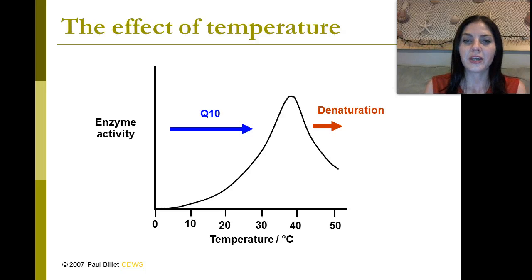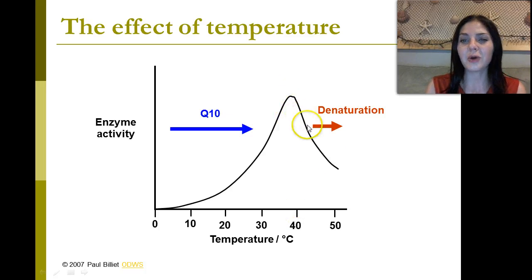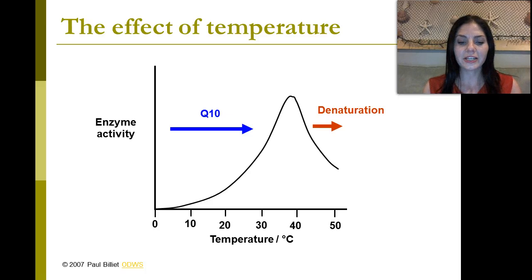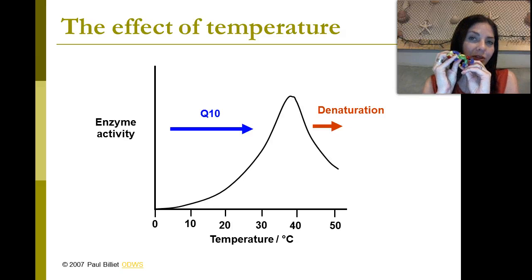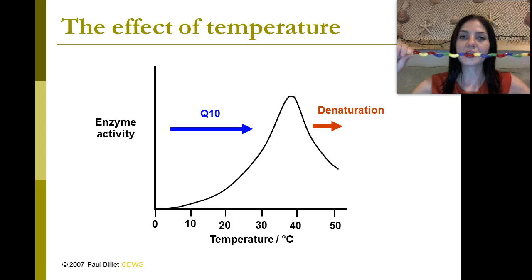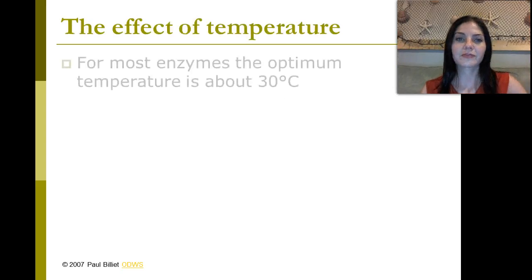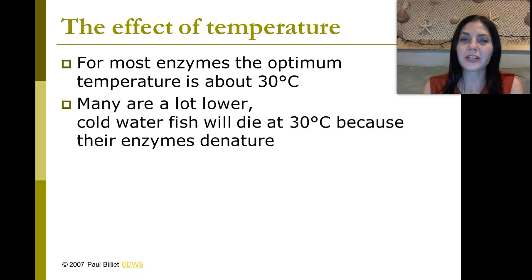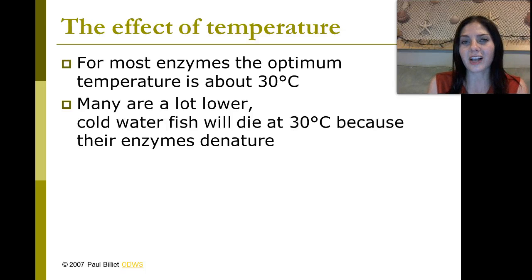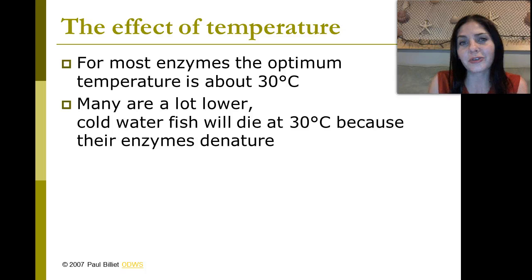The effect of temperature on enzymes: if you look at the graph, this enzyme is most active at about 37 or 38 degrees Celsius. If it gets too hot, though, the enzyme activity drastically drops off because that enzyme is denaturing. Denaturing means that all those bonds in the protein are being broken down, and it goes back into its primary structure. For most enzymes, the optimum temperature is about 30 degrees Celsius, and many are a lot lower. For example, cold-water fish will die at 30 degrees Celsius because their enzymes denature — their enzymes are used to extreme cold temperatures, so that fish can no longer function in warmer water.